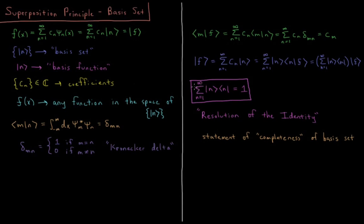Since we started with f, all of this must equal 1. This operator — the sum from n equals 1 to infinity of a ket times a bra vector, acting on our ket vector — equals 1. In principle there will be an infinite number of basis functions if the sum goes to infinity. This is called the resolution of the identity. It is both a statement of the completeness of the basis set and a statement that we can represent any function f of x in the space of these basis functions, confirming that the basis functions are complete.